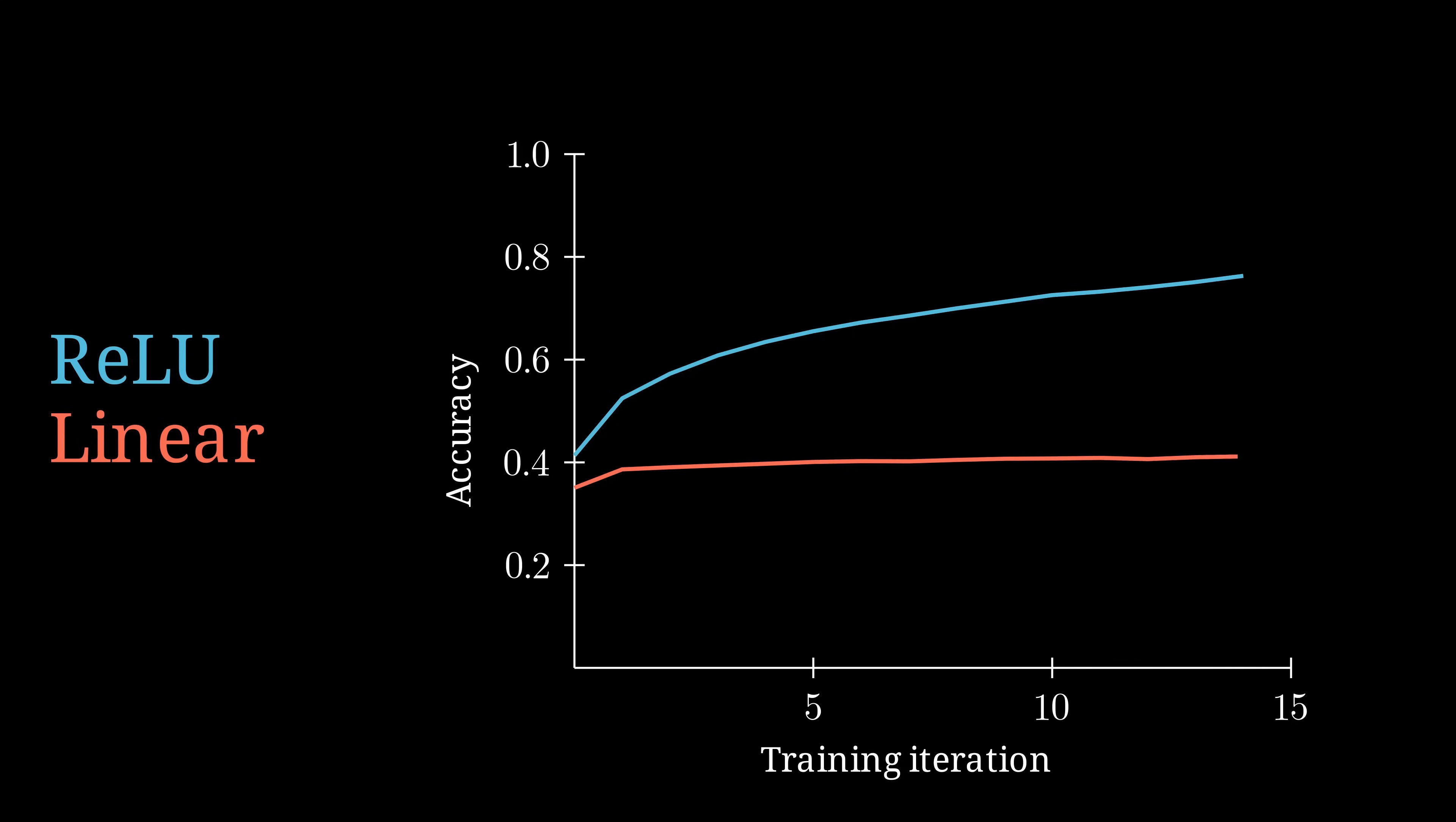Actually, you may think that the roughly 40% accuracy are not too bad for it not being able to learn. In the case where the model cannot learn at all, shouldn't it be more like random guessing? So 10% for 10 classes?